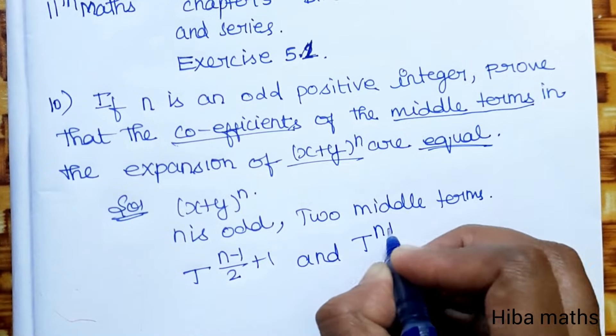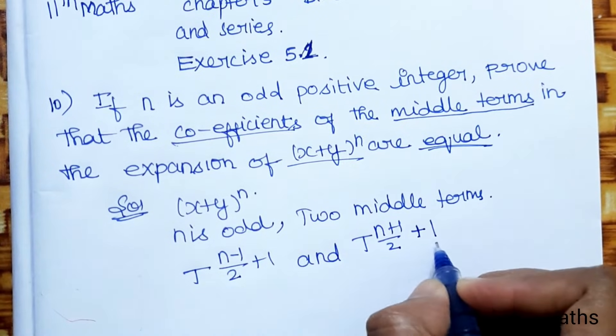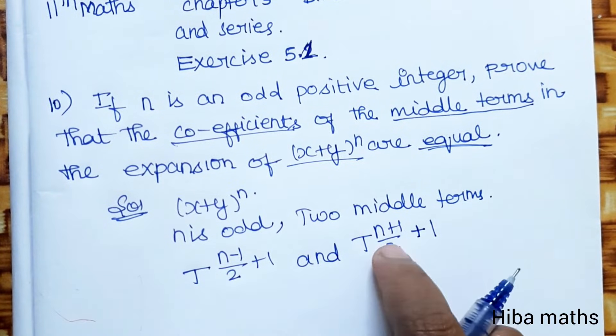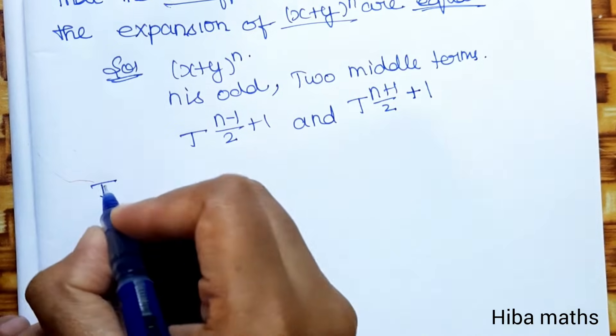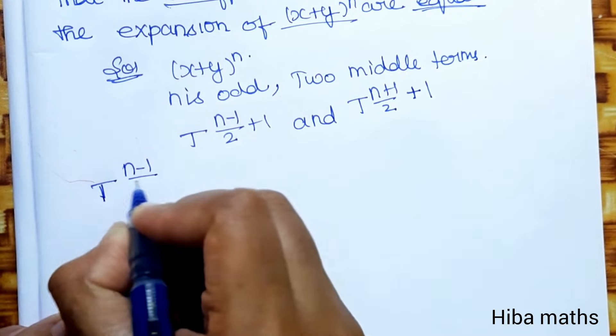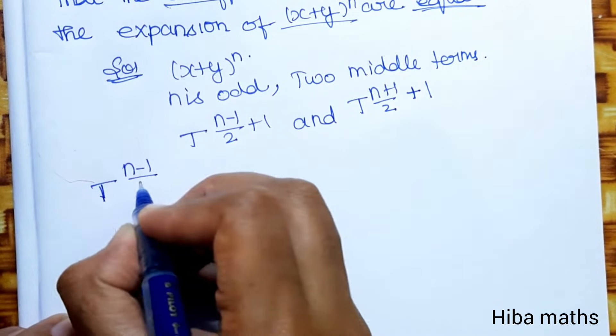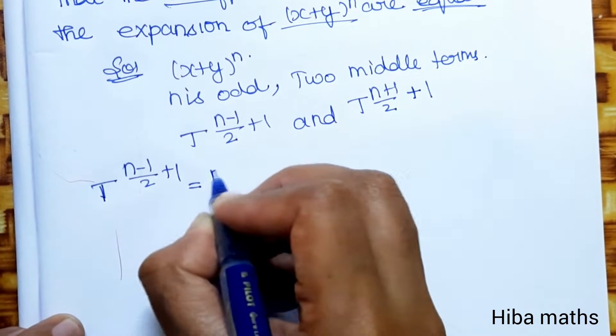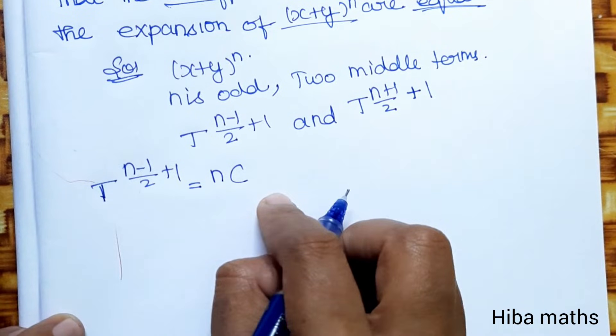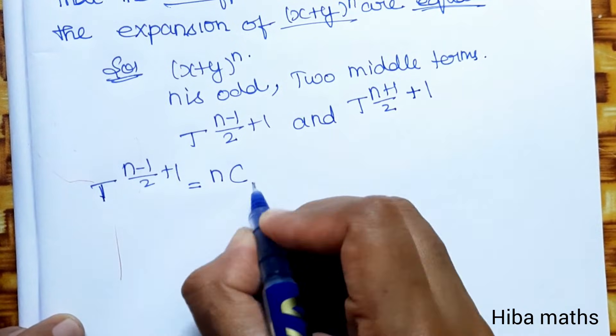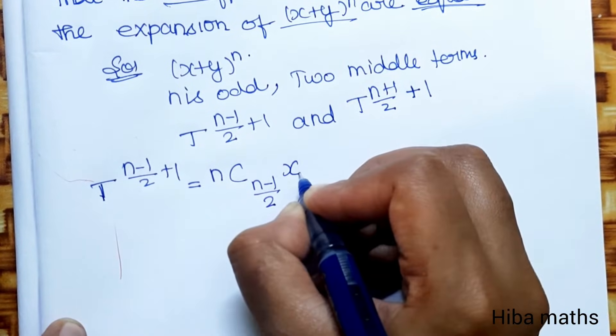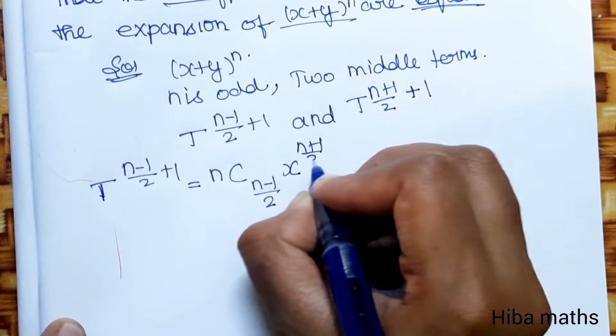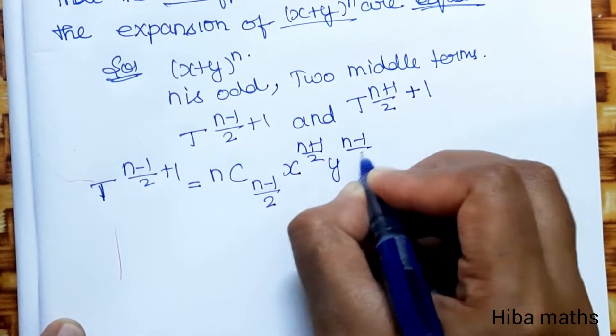So one is nC((n-1)/2) × x^((n+1)/2) × y^((n-1)/2), and the other is nC((n+1)/2) × x^((n-1)/2) × y^((n+1)/2).